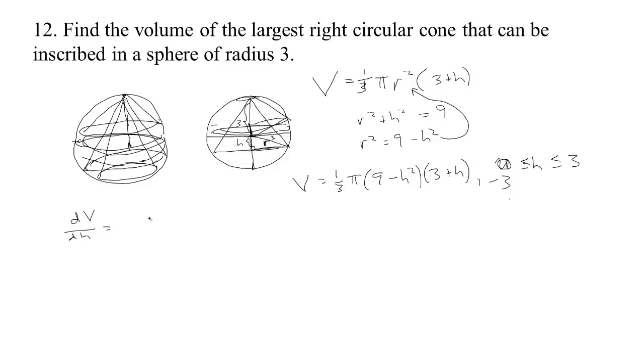So, if we take the derivative to find the critical points, let's see, we have 1/3 π, and then to take the derivative of this product, we take the derivative of the first, which is negative 2H times the second, which is 3 plus H, plus the first, which is 9 minus H squared times the derivative of the second, which is just 1. Now, with a little distributing, I think we can collect like terms. We're going to have negative 6H and minus 2H squared plus 9 minus H squared.